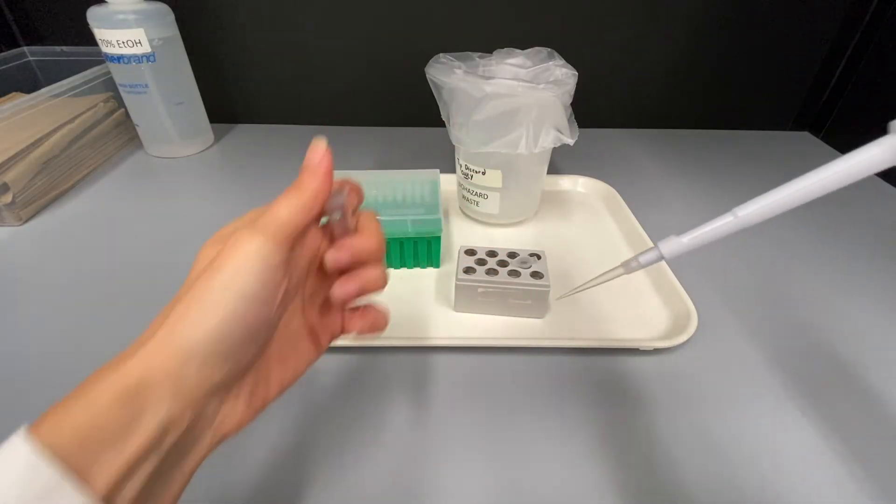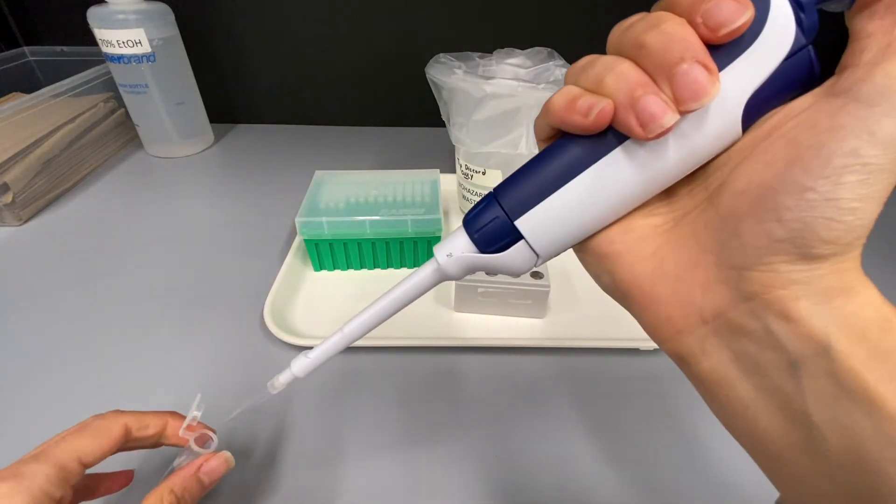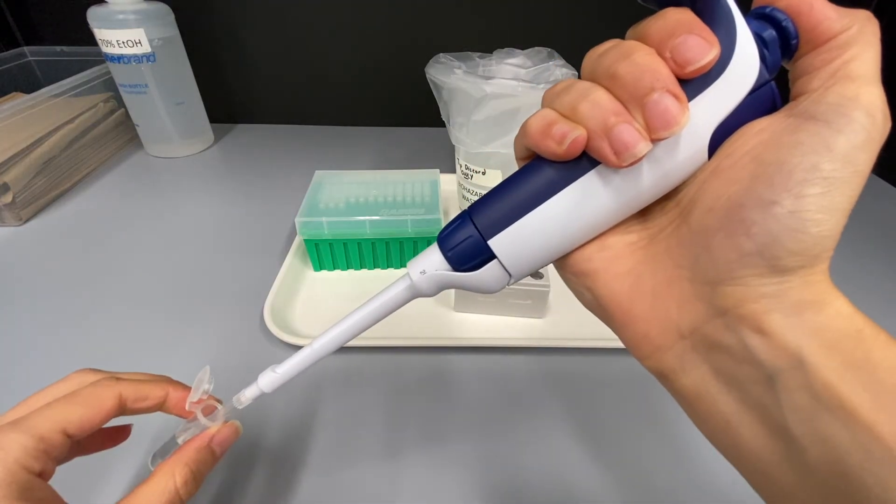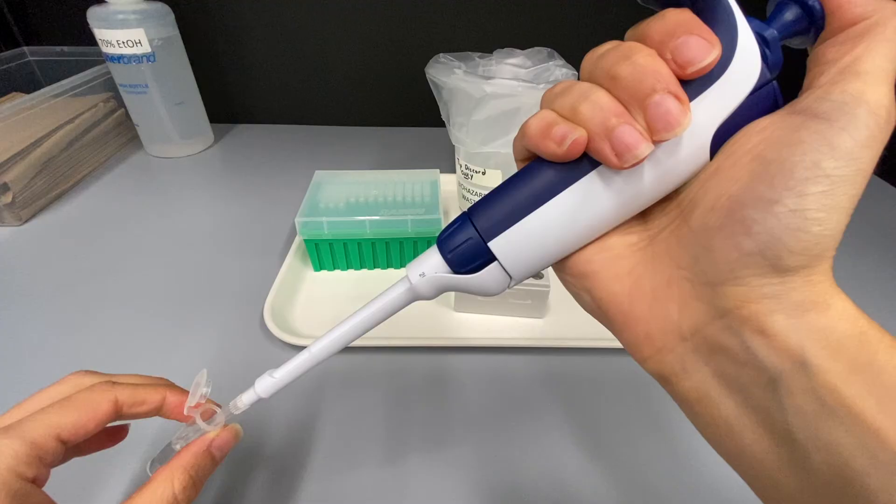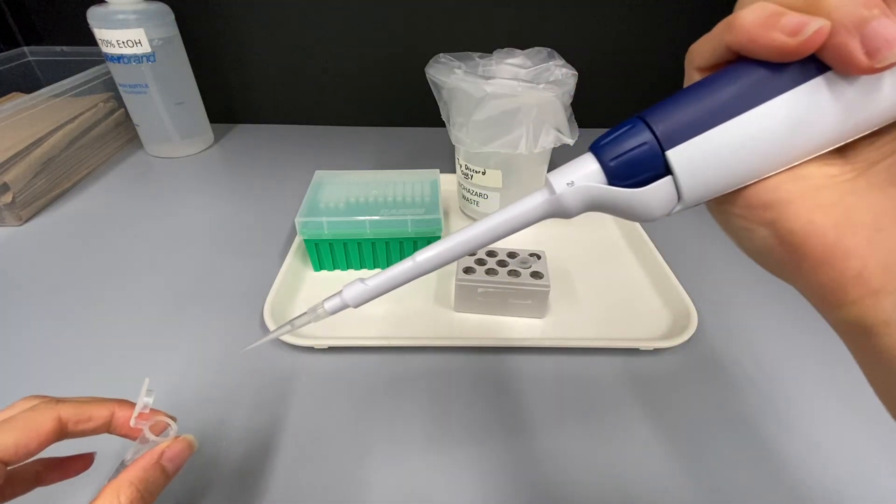Open the tube, push the pipette plunger down to the first stop, put the tip into the solution, and slowly release the plunger to pick up the liquid, keeping the tip in the solution until the liquid has fully entered the tip. You should not see any bubbles in the liquid in your tip.